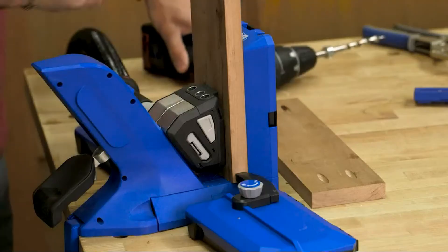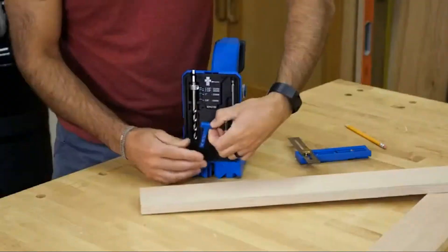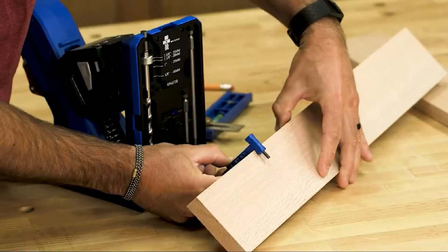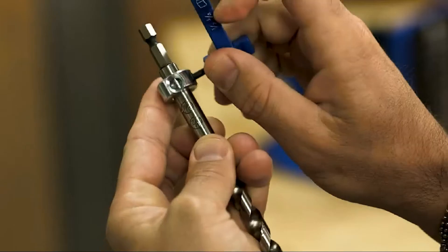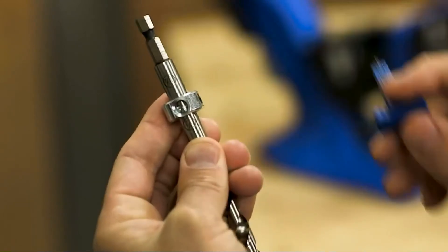Setting the pocket hole drill bit is easy too, thanks to edge markings for common thicknesses of half inch, three quarter inch, and one and a half inches, and a sight window in the stop collar. Just line up the stop collar and lock it down.